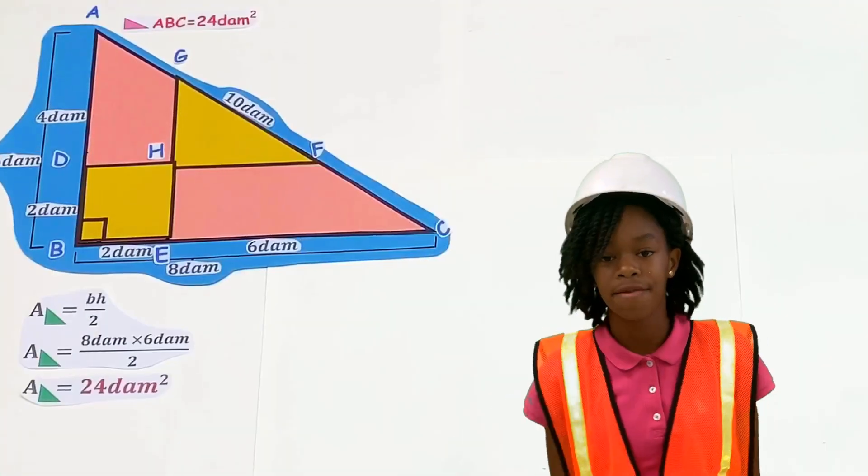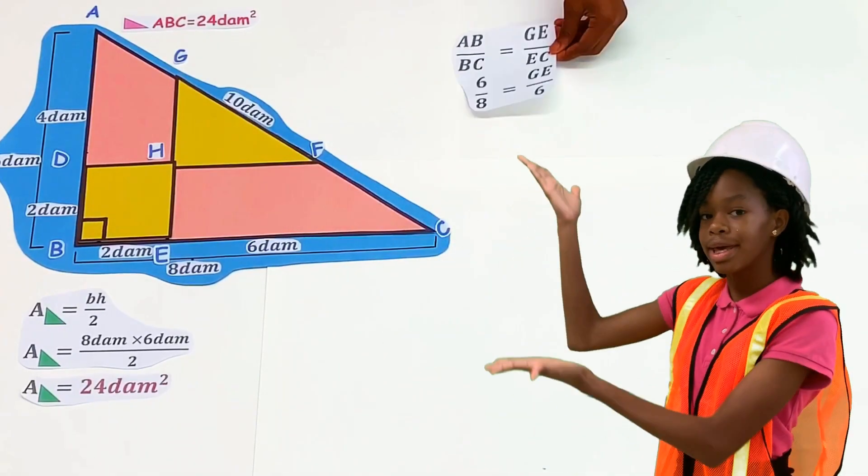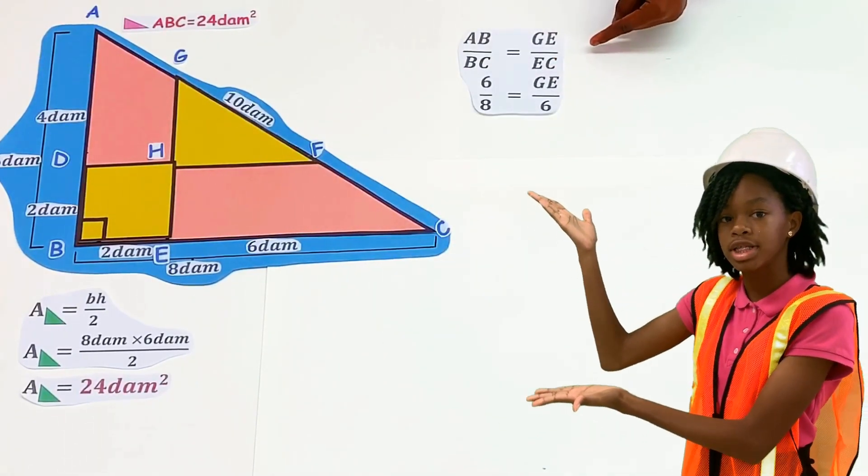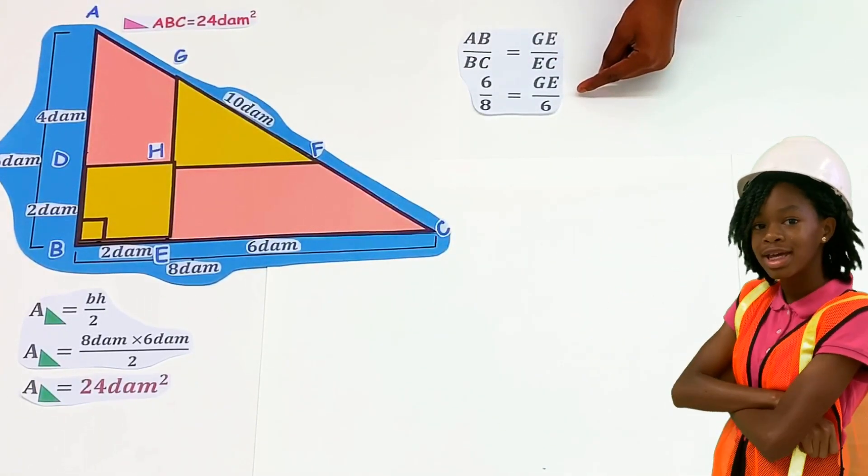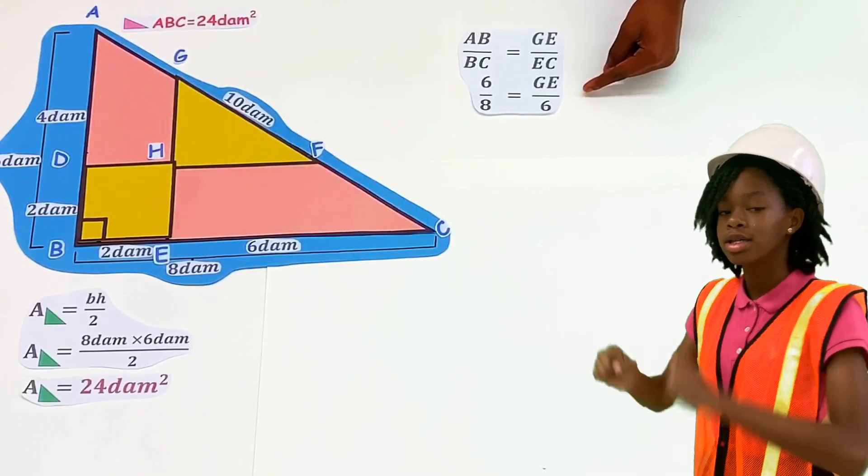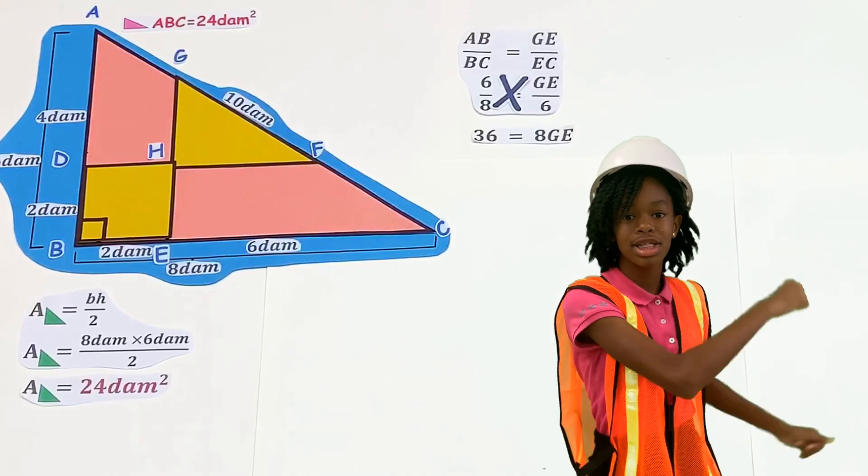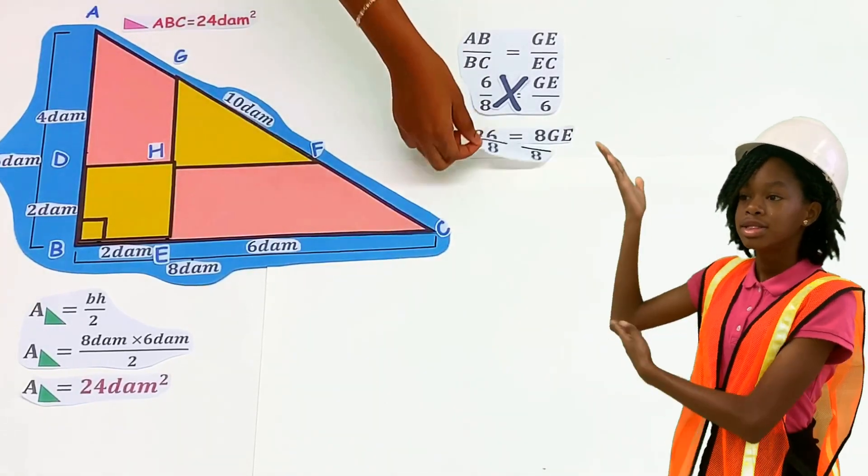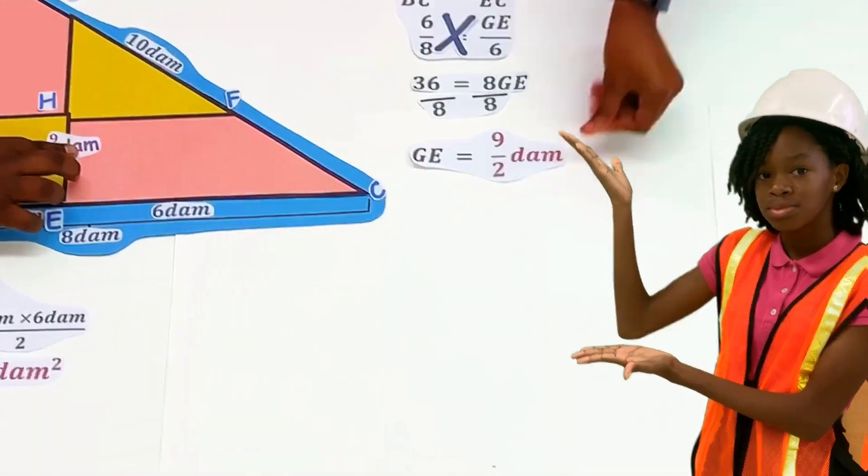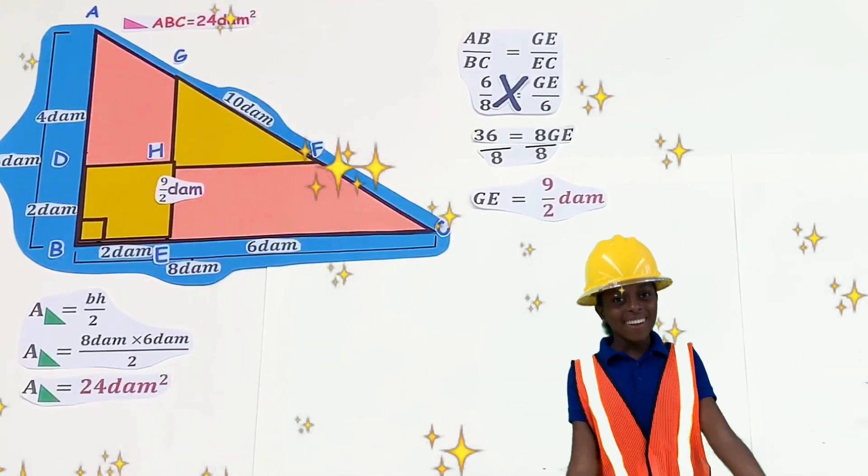Four heads are better than two. Since corresponding sides are similar because of proportion, we know that AB over BC is equal to GE over EC. 6 over 8 is equal to GE over 6. Cross multiply, 36 equals 8 times GE. To isolate GE divide both sides by 8. GE equals 9 over 2. I think my memory is coming back. Great!